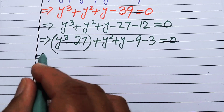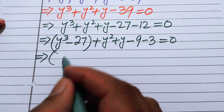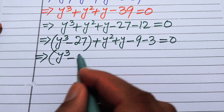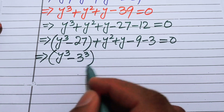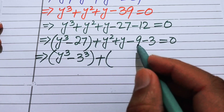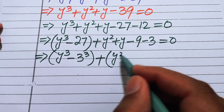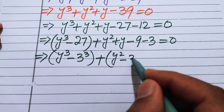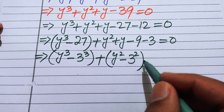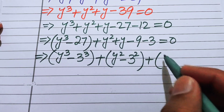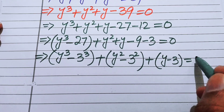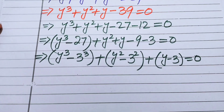We rearrange and pair the terms: y³ with 27 (written as 3³), y² with minus 9 (written as minus 3²), and y minus 3, giving us y³ minus 3³ plus y² minus 3² plus y minus 3 equals 0.